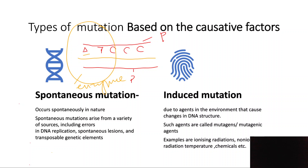A is complementary to T, and C is complementary to G. Normally, if there are errors during replication, the polymerase enzyme will correct them. But sometimes the errors are not corrected — there is an error that remains in the sequence, resulting in an error in replication.